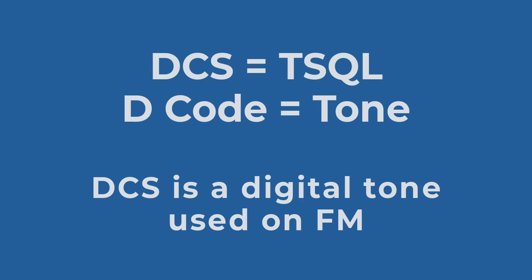On some repeaters, you'll be told that it uses DCS. This is digital coded squelch. DCS is comparable to tone squelch — the same transmit and receive of the signal, the same deafness on your radio if you set it up wrong. D-code in the RT-Systems programmers is equivalent to Tone. Digital coded squelch is a digital tone. It is used on an FM analog system. DCS is not used on any of the digital modes.